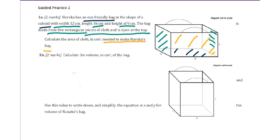Calculate the volume in centimeter cubed of the bag. We know for the volume, we have length times the width times the height. So we have 12 times 36 times 9 equals 3,888 centimeters cubed.